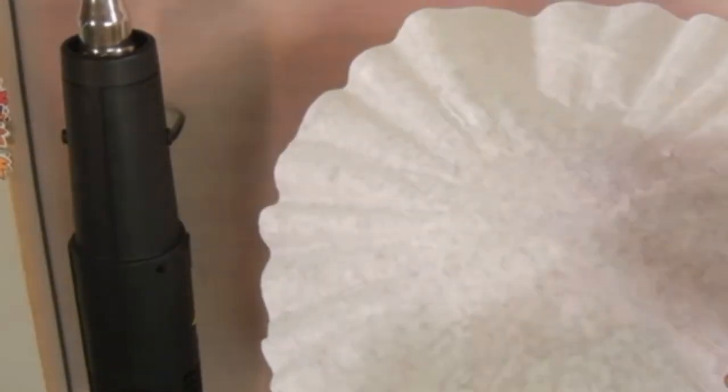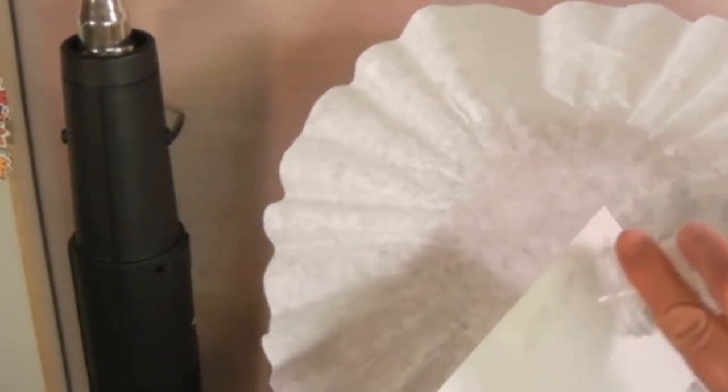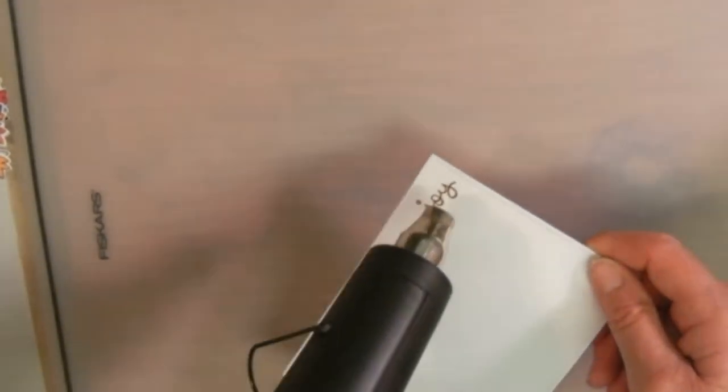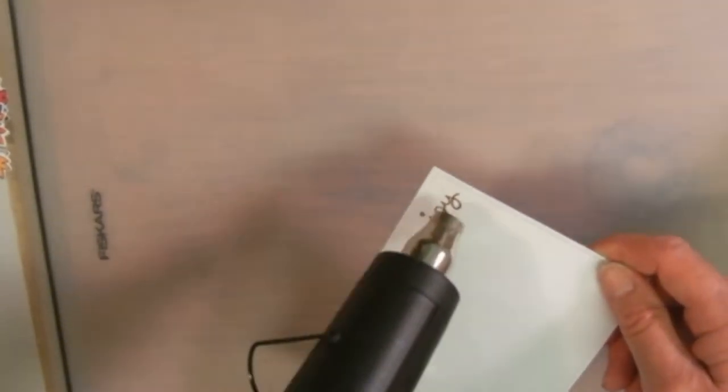Next I'm adding my clear embossing powder. Now the one thing I forgot to do is use my powder tool before I stamped. And then I did get a little bit of the clear embossing powder that stuck. So I had a problem but I'll fix it later on.